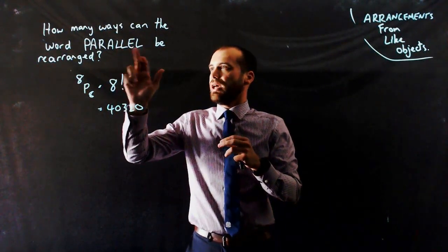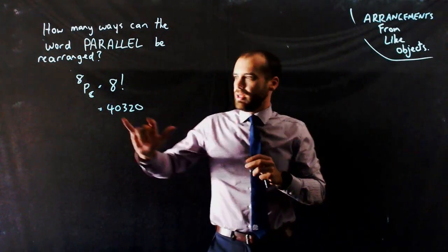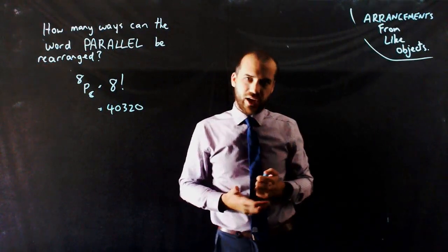So because of the 3 L's and the 2 A's, those like objects, this number is going to be greatly reduced. So we need to come up with a correcting factor for that.